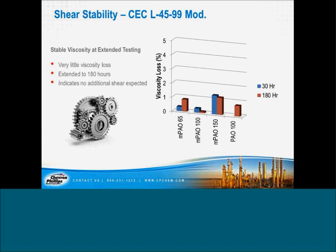The next slide is a graph showing the shear stability. We've looked at the various mPAOs in comparison to a PAO 100. High viscosity PAOs are known to be very shear stable, but it's nevertheless something to examine. At 30 hours of the KRL shear stability test, we see less than 1% shearing for the mPAOs. We then ran that out to 180 hours to verify it didn't shear beyond that 1% over time. There seems to be an initial shear of less than about 1% that occurs, and then it is very stable after that.